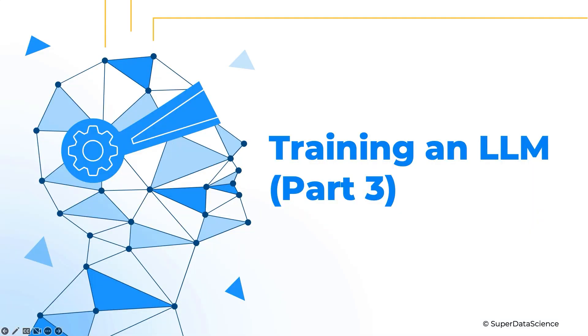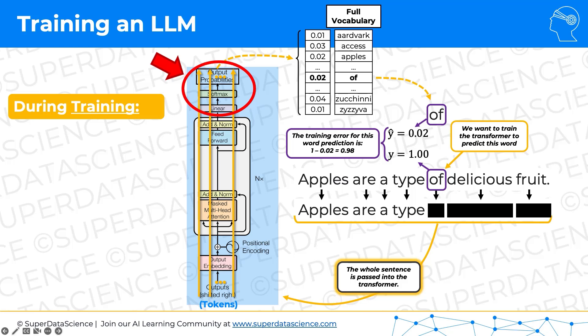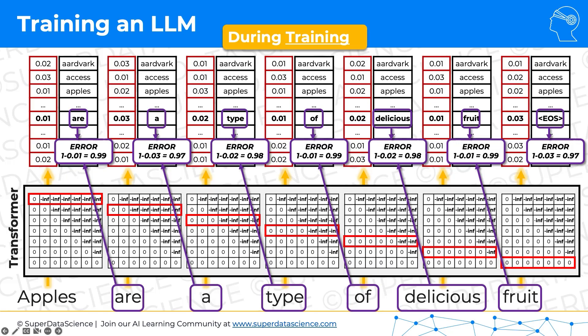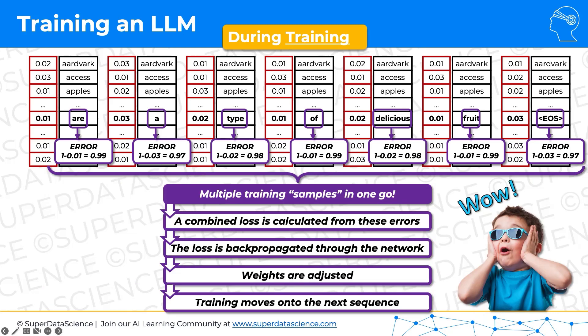Hello and welcome back. Today we're continuing diving even deeper into training of a large language model. Here's what we discussed previously: we talked about how training of one sample happens, then the triangular mask and how it works, then the triangular mask in action during the processing of one sentence. With 'apples are a type of delicious fruit', thanks to the triangular mask, we get not just one sample but seven samples — one for each word. We discussed how the triangular mask is applied to accomplish the prediction of every single next word, including the end-of-sequence token. Multiple training samples are generated in one go, a combined loss is calculated, losses are backpropagated, network weights are adjusted, and training moves on to the next sequence.